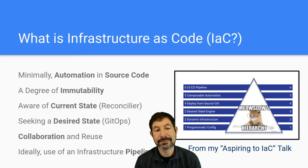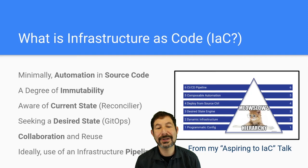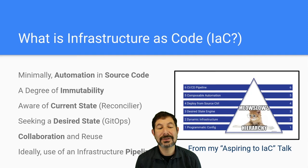The thing about infrastructure as code is that everybody sees something different in it. I explored this in another topic called "Aspiring to Infrastructure as Code" where I decompose infrastructure as code into six key areas, starting with things like using source code, having immutability, being aware of current state, seeking desired state, collaboration and reuse, and then using an infrastructure pipeline. I'm going to dive into those so that we have some base.